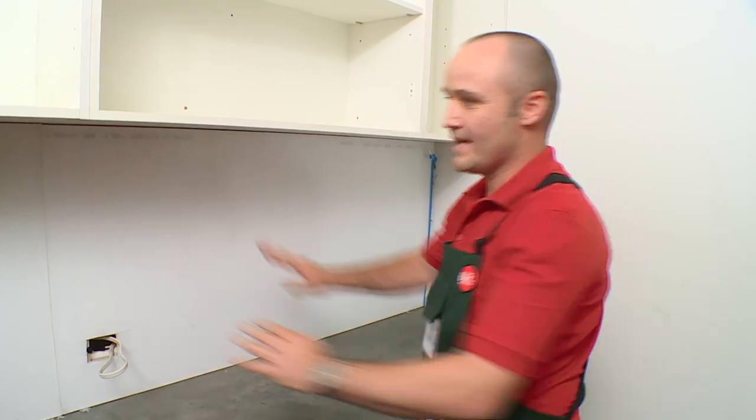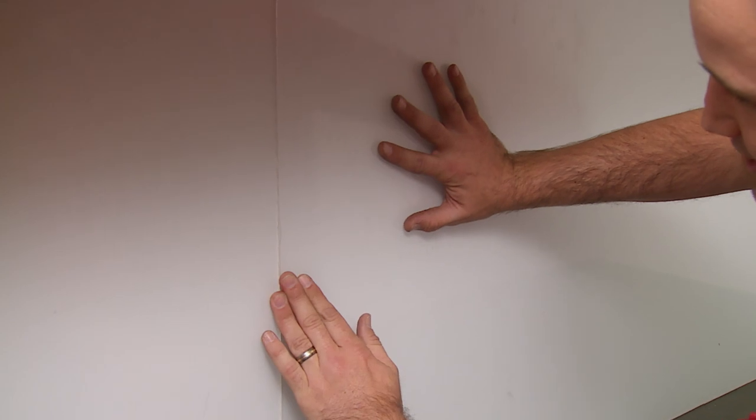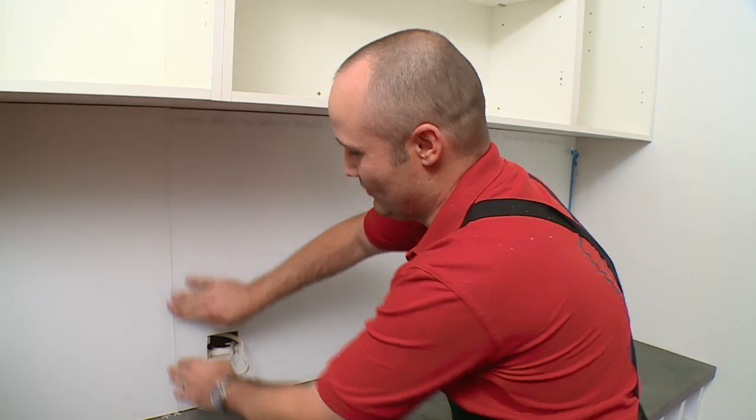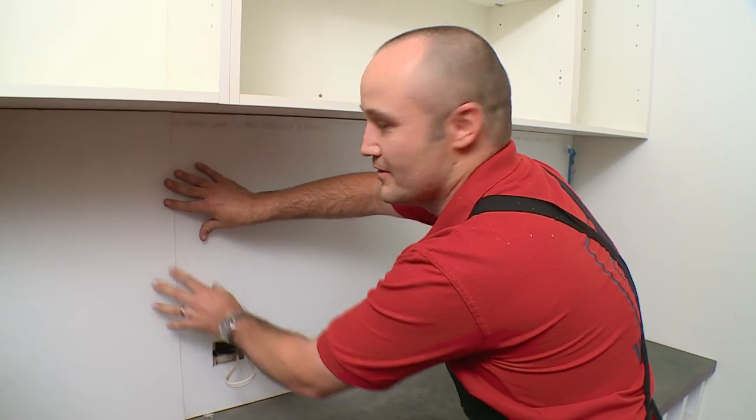We now repeat the process on the other side where we've got the join. So we've put the pieces up, push it tight so the join fits nicely. Make sure it is nice and level and there's no silicone protruding out of the join.